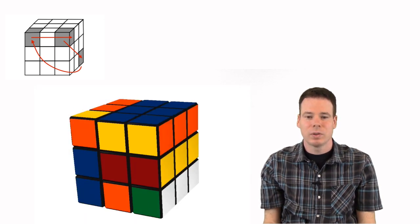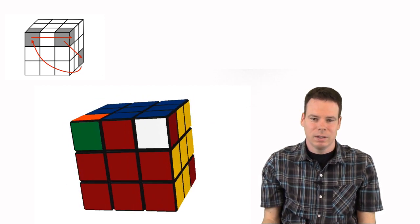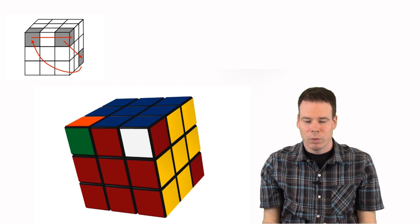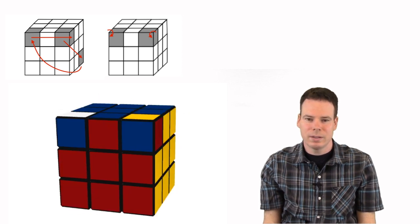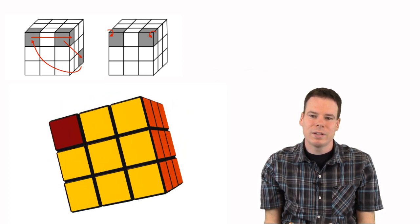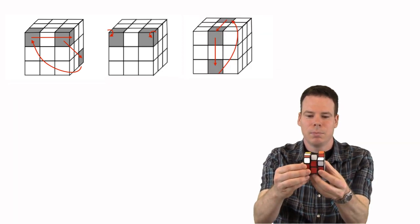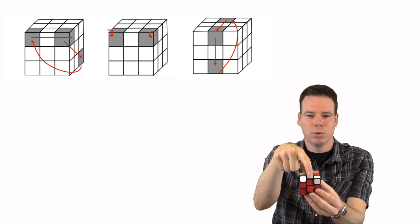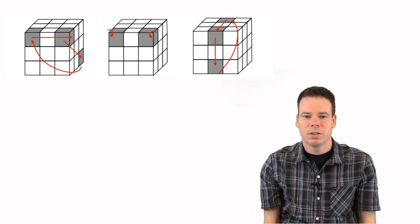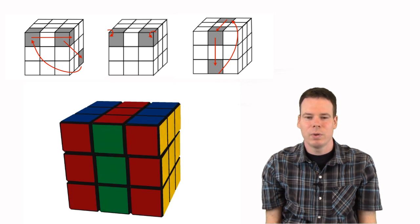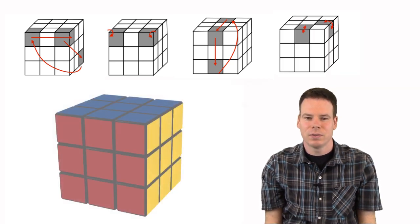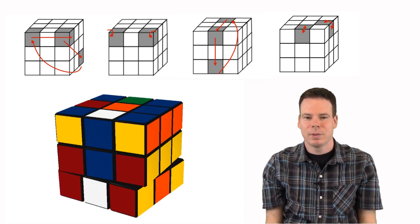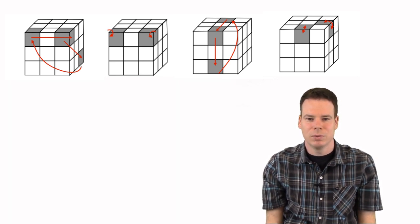The four basic moves we're going to look at today are: the corner three cycle — pick any three corners and move them around in a cycle; double corner twists — pick any two corner pieces and twist them in place; edge three cycles — pick any three edges and cycle them amongst themselves; and lastly, edge flips — pick any two edges and flip the edge pieces in place. So let's get to it.